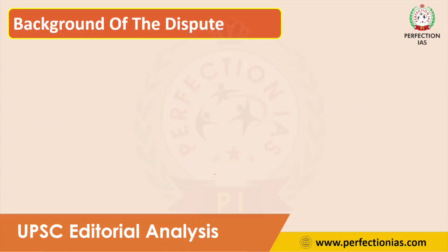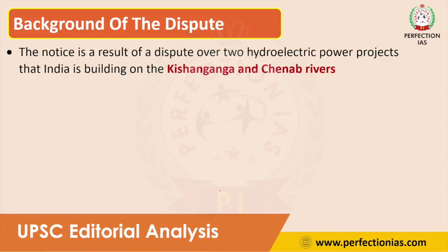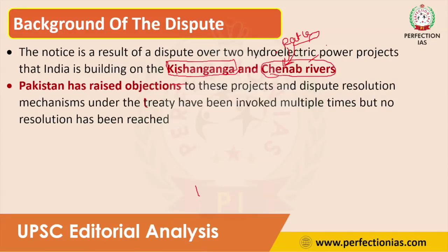The notification is the result of a dispute over two hydro power projects in India. One is the Kishan Ganga Hydro Power Project, which India is constructing on the Kishan Ganga river. The other is the Rattle Power Project, which India is constructing on the Chenab river. Since Chenab is allocated to Pakistan, Pakistan is raising objections to these two projects. Pakistan has objected, but no resolution has been reached through the dispute resolution mechanism given in the treaty.